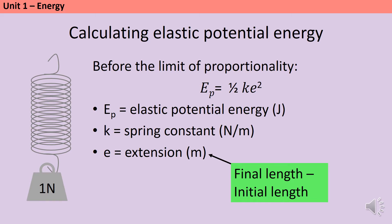You also need to know the units for each term. Elastic potential energy is measured in joules. The spring constant is in newtons per metre, and extension should be measured in metres, as with all lengths in physics. This can be confusing because in classroom experiments springs are not metres long, so you'll almost always need to convert your extension into metres.